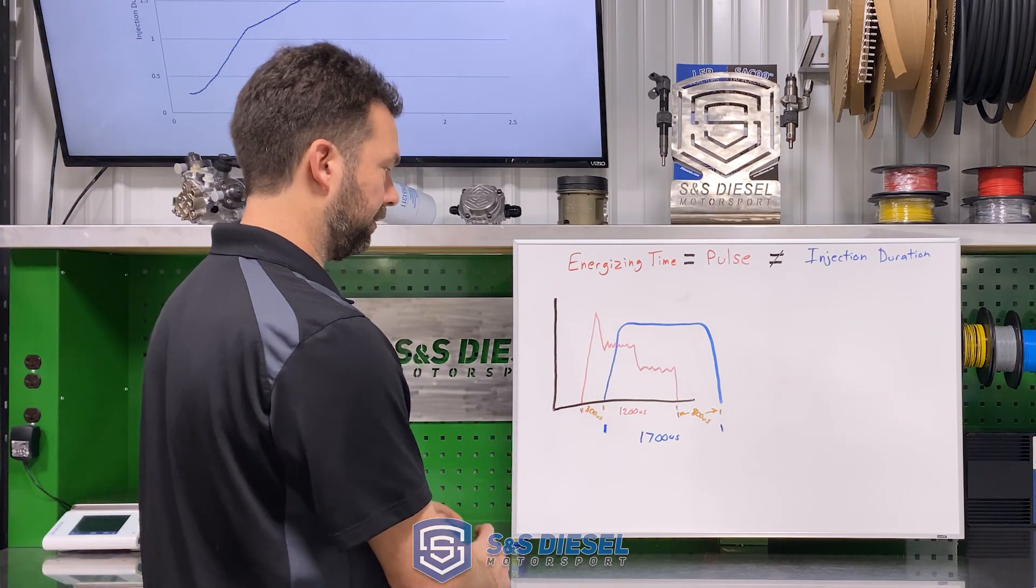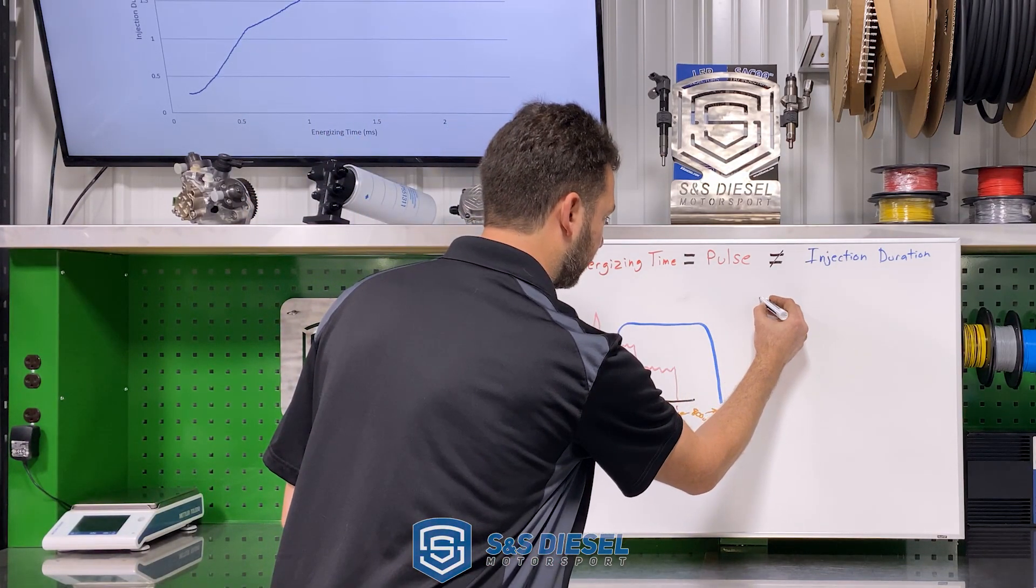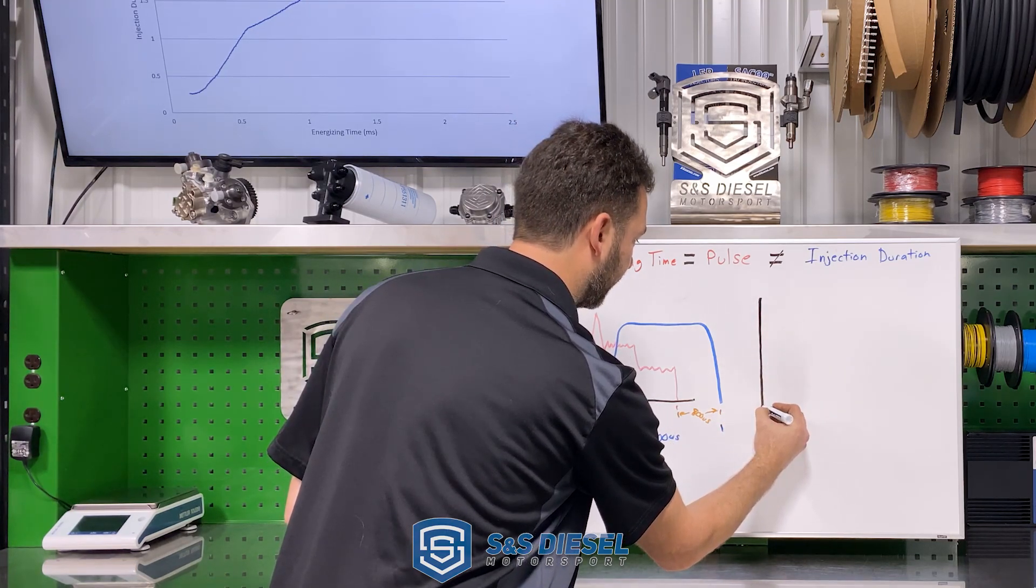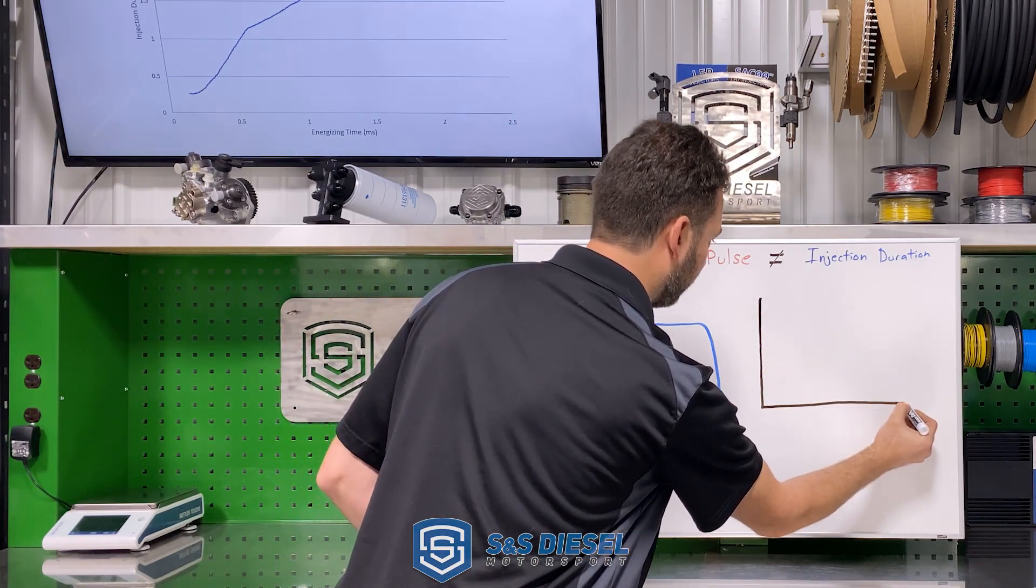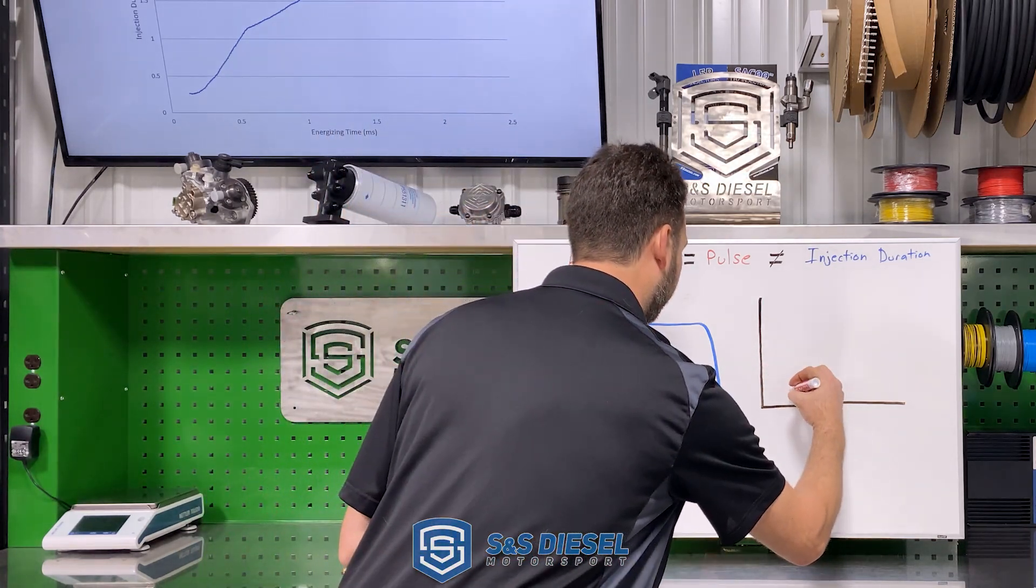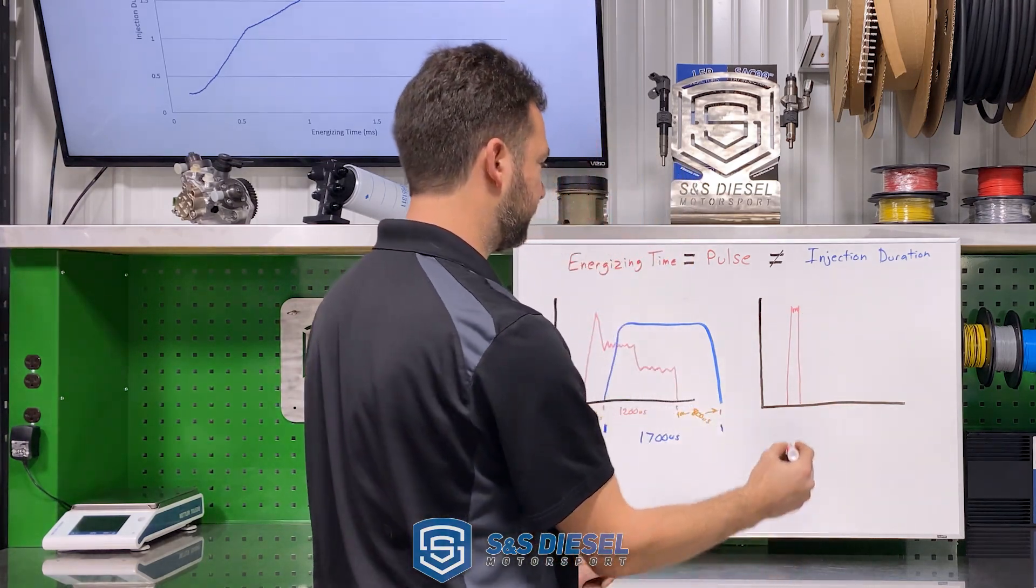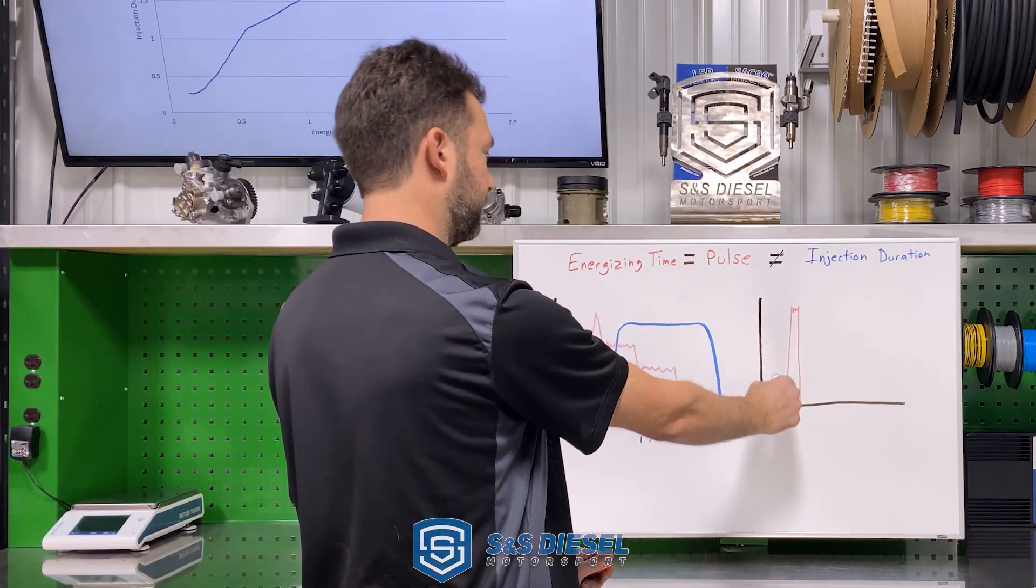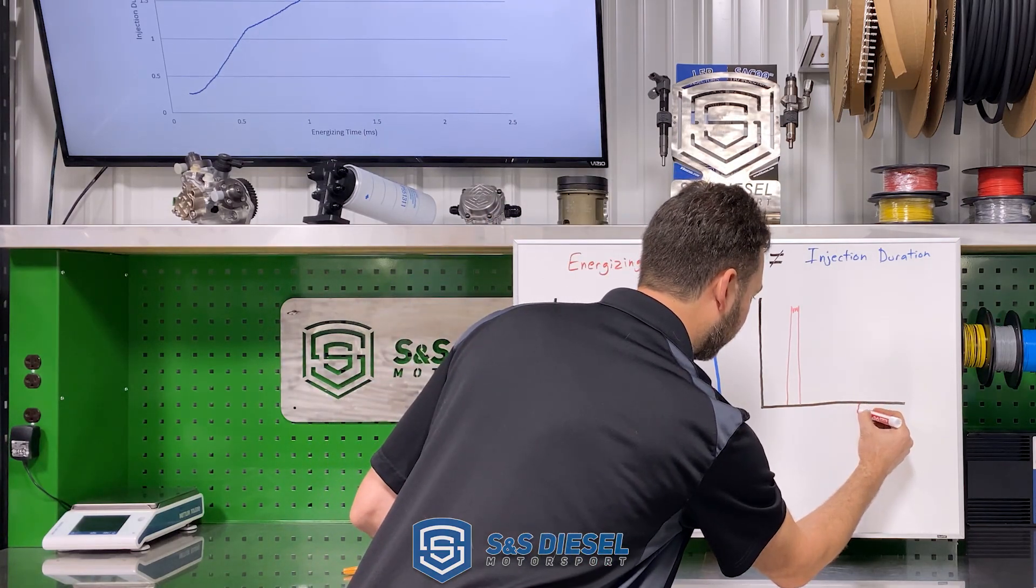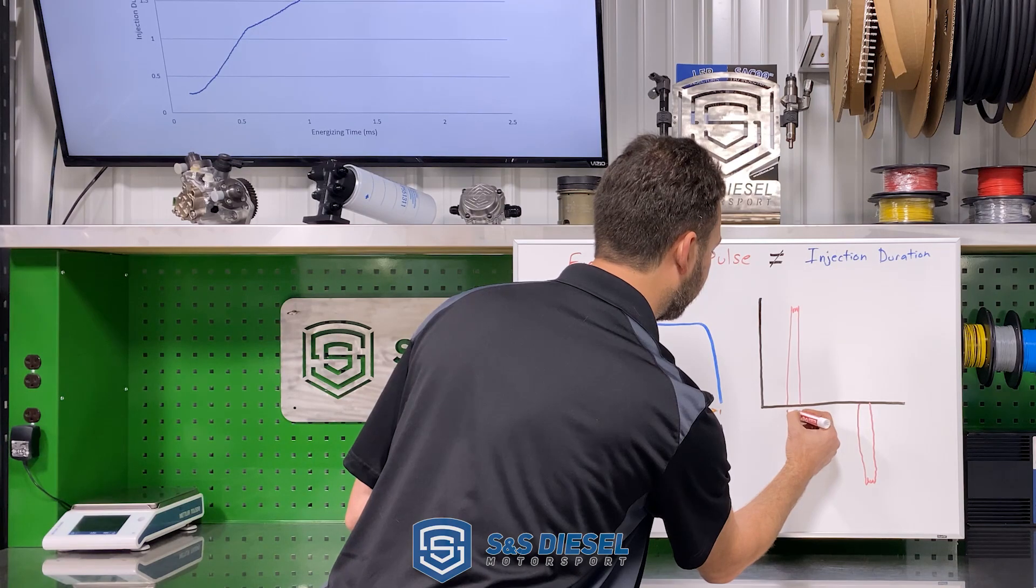Next example we'll have is going to be the Piezo injector, like the Ford Scorpion or the LML. Piezo injectors have a significantly different function but still have a delay time. So when you fire a Piezo injector, you actually charge the crystal, so it's a quick pulse. And then when you're ready to stop injecting, you have another quick pulse to discharge.